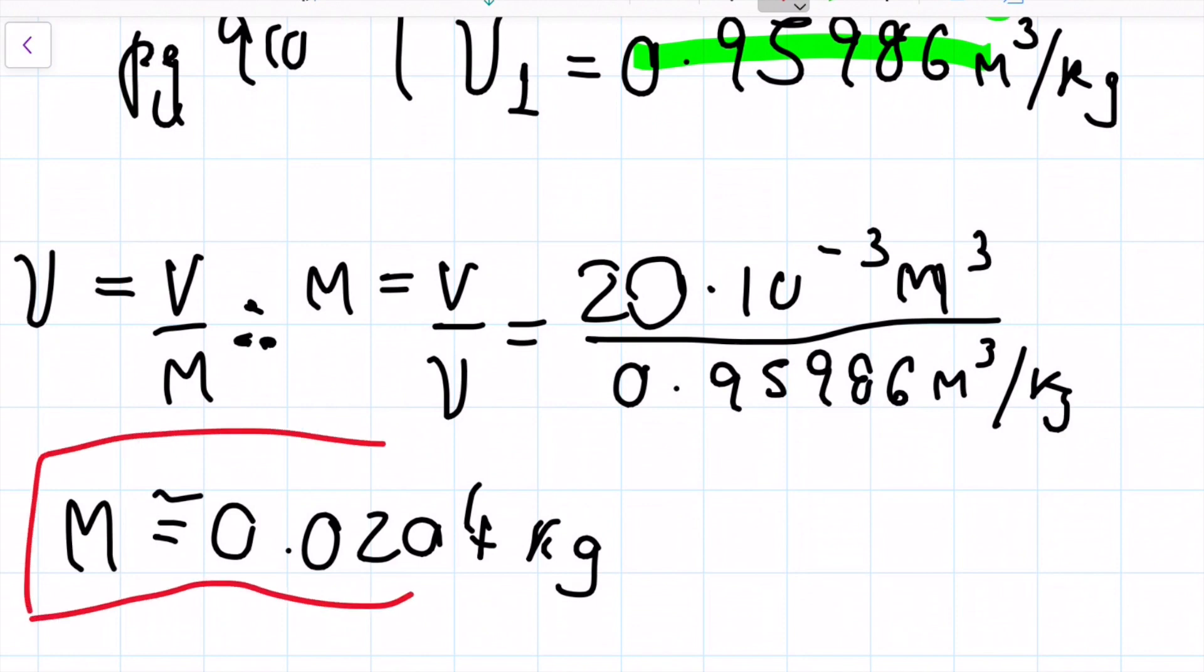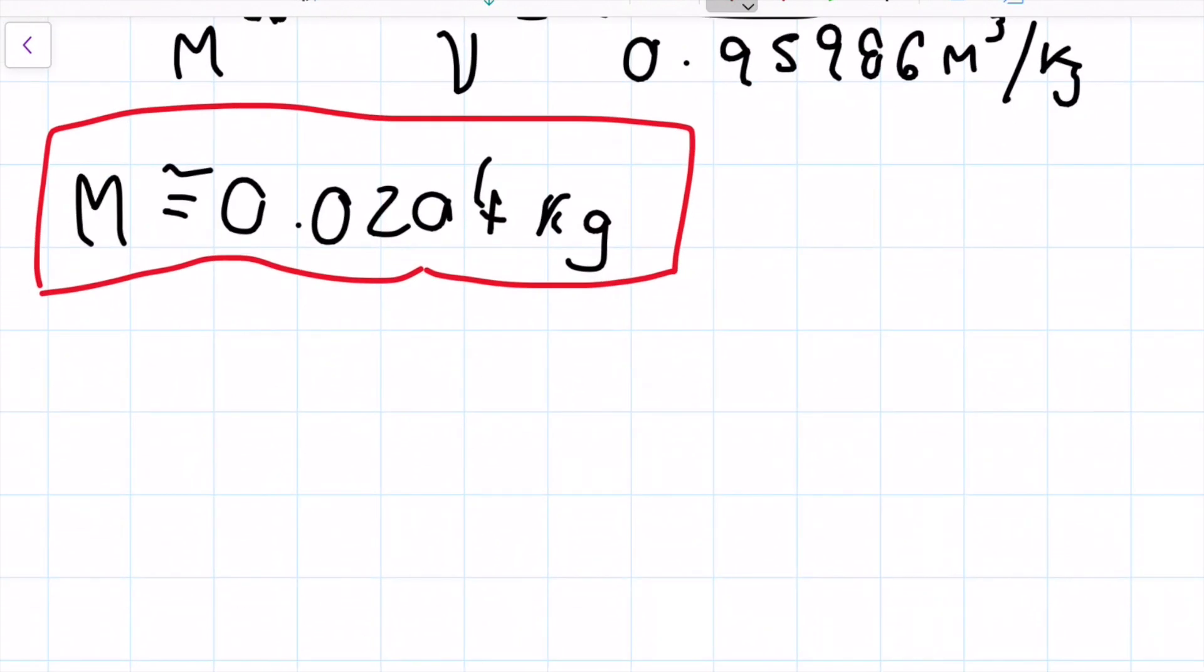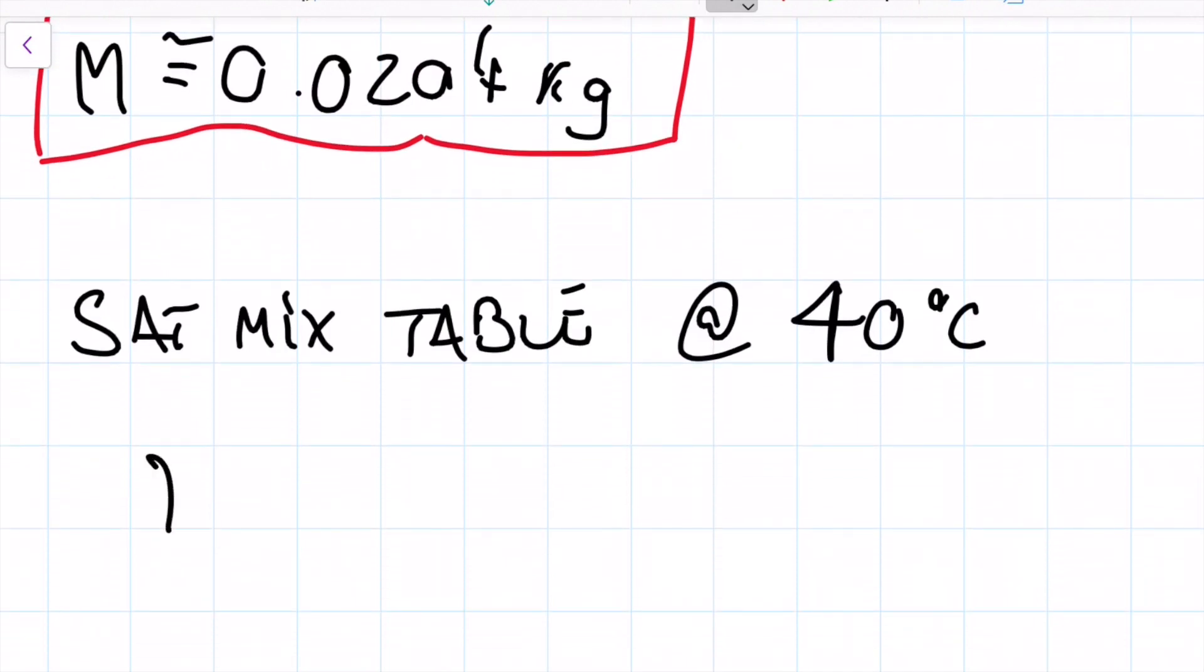So we have the mass for the second and first state because it doesn't change, right? Cool. So now the second thing is I can go to my saturated mix table and I can check at 40 Celsius, and I'm going to note that my specific volume falls between the saturated liquid and the saturated vapor. So it's smaller than the saturated vapor but it's larger than the saturated liquid.